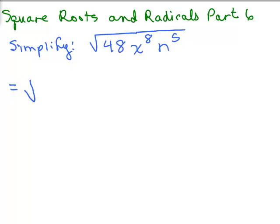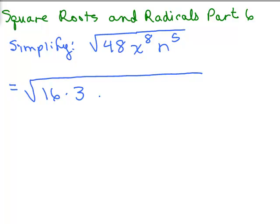What I'm going to do is write 48 as a perfect square times something else. You can actually write 48 as either 4 times 12 or 3 times 16, and it's best if you pick the biggest factor that's a perfect square — 16 times 3.